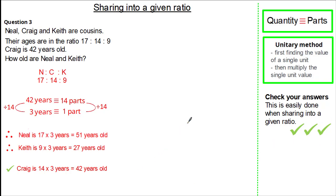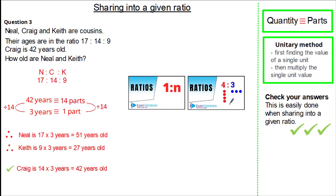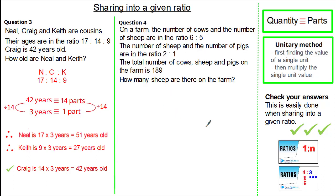Now let's have a look at a slightly more complicated question — you may need to refer back to a couple of our ratio videos for extra support. On a farm, the number of cows to the number of sheep is in the ratio 6 to 5. The number of sheep to the number of pigs is in the ratio 2 to 1. The total number of cows, sheep and pigs is 189. We're asked to work out how many sheep are on the farm.